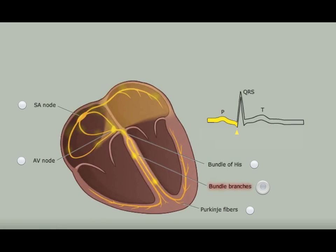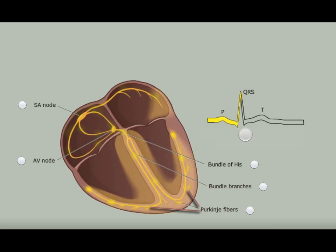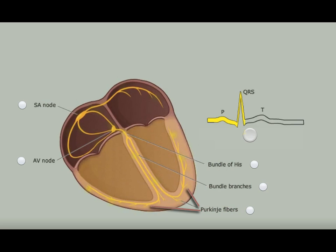As you continue depolarization past the bundle branches, electrical conduction spreads through the Purkinje fibers, fast conducting specialized cardiac myocytes, and then on to the rest of the ventricular muscle. With their extensive branching, Purkinje fibers reach a large portion of the endocardial layer of the ventricles.